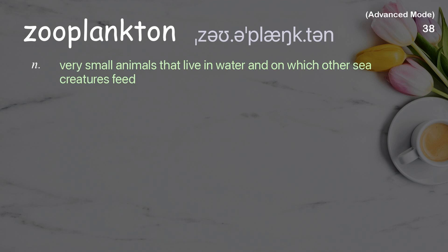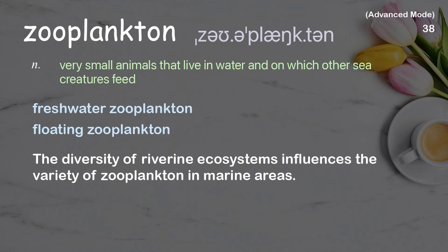Zooplankton: tiny small animals that live in water and on which other sea creatures feed. Examples: freshwater zooplankton, floating zooplankton. The diversity of riverine ecosystems influences the variety of zooplankton in marine areas.